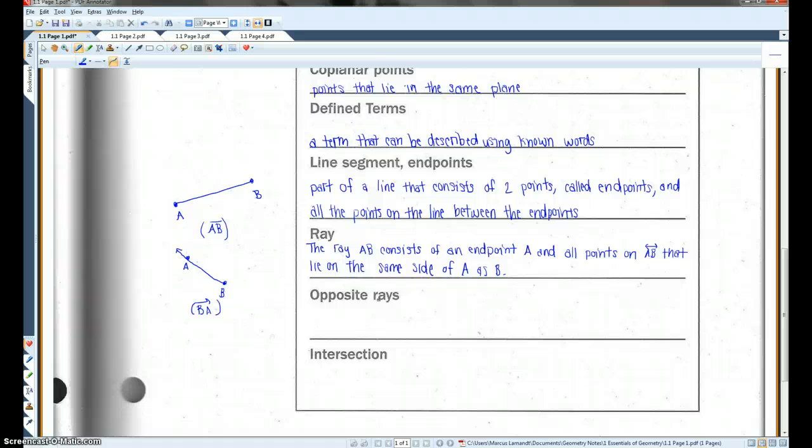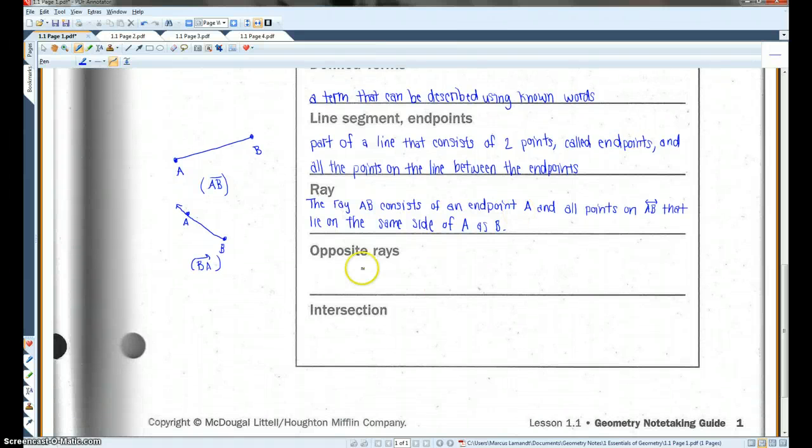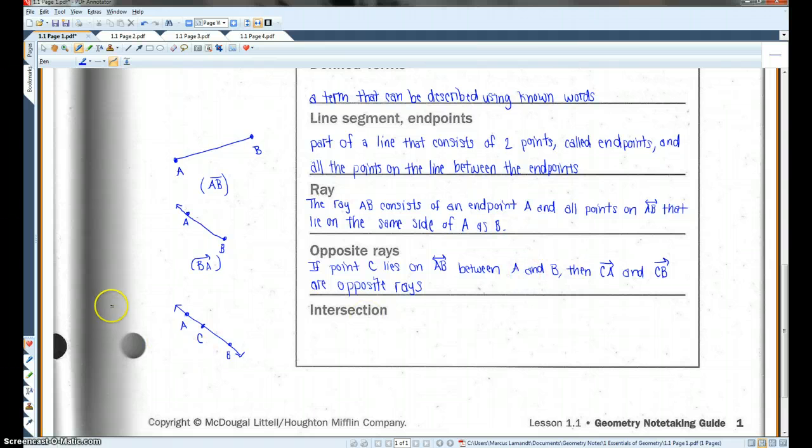All right. Opposite rays. I'll write the definition. If point C lies on line AB between A and B, as shown, then ray CA and ray CB are opposite rays. So, in this diagram, because C is in between A and B, ray CA and ray CB are opposite rays. Okay. Basically, if you have rays going opposite directions like this, they're opposite rays.